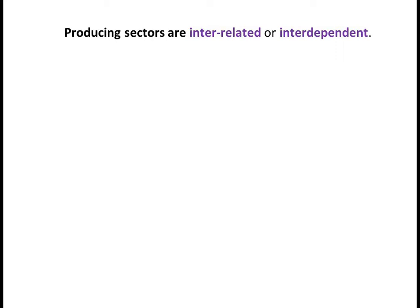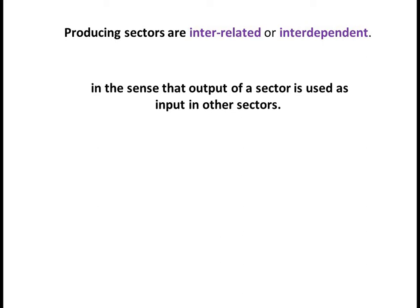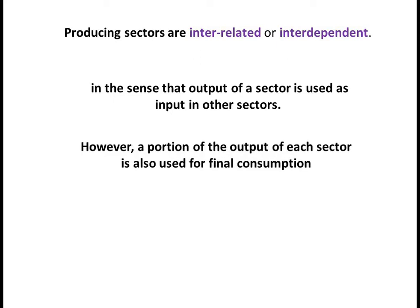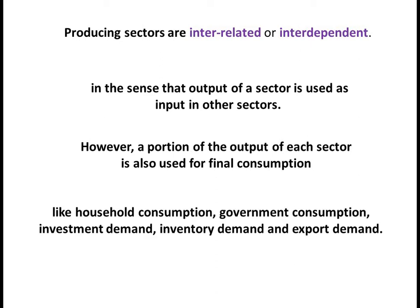Producing sectors are interrelated or interdependent in the sense that the output of a sector is used as input in other sectors. However, a portion of the output of each sector is also used for final consumption, like household consumption, government consumption, investment demand, inventory demand, and export demand.